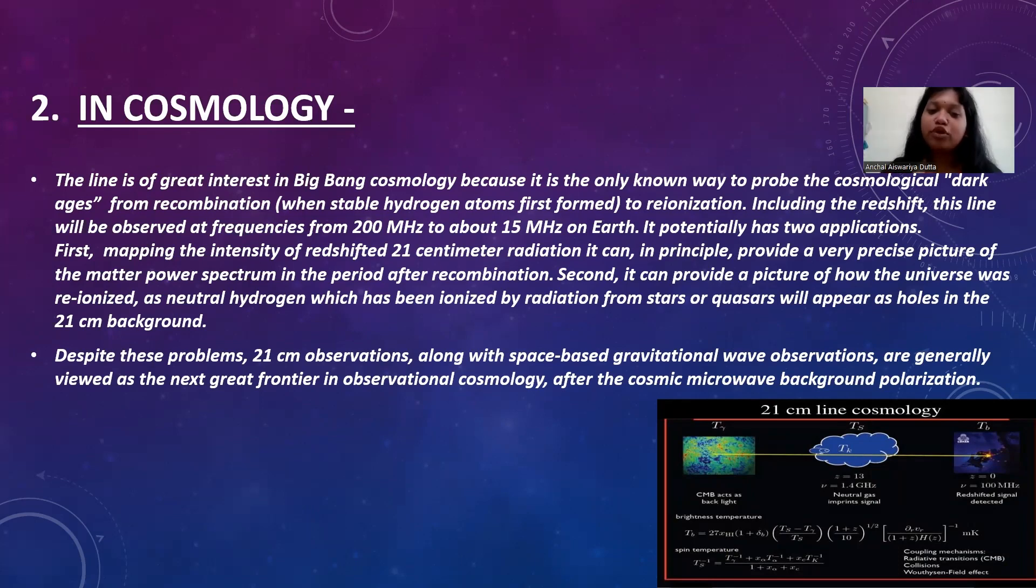On Earth it potentially has two applications. First, mapping the intensity of redshifted 21 centimeter radiation. It can provide a picture of how the universe was re-ionized, as neutral hydrogen which has been redshifted and ionized by radiation from stars or quasars will appear as holes in the 21 centimeter background. It can map the universe and provide you a brief idea of how the universe was re-ionized.